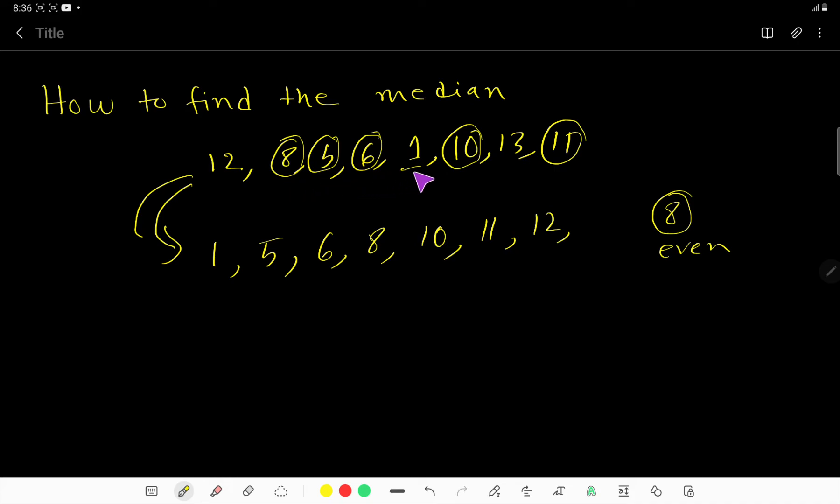We have arranged all the data in ascending order: 8 terms, an even number. So the median will be the average of the middle two numbers.